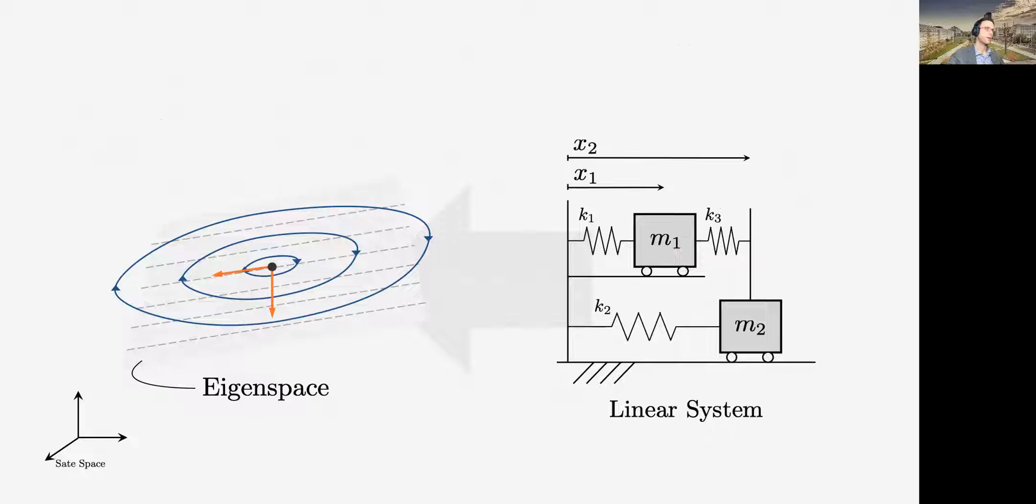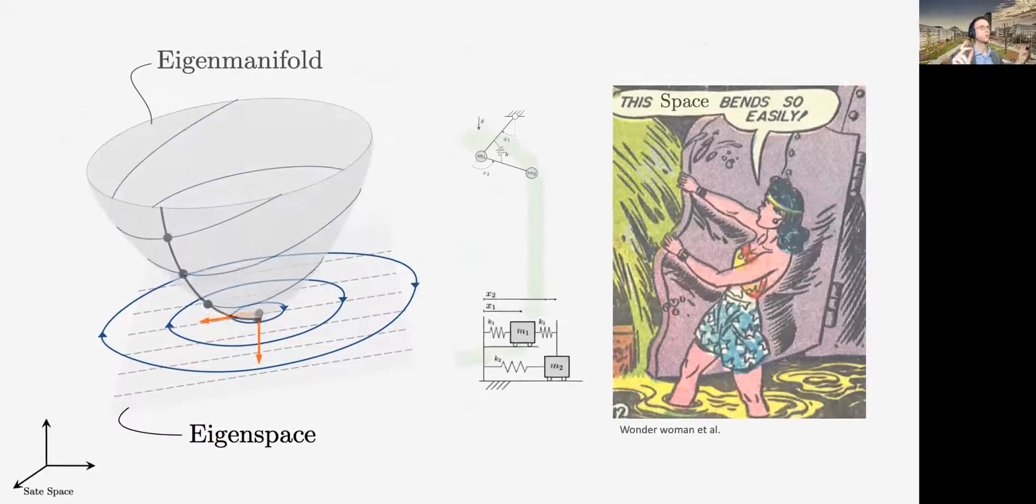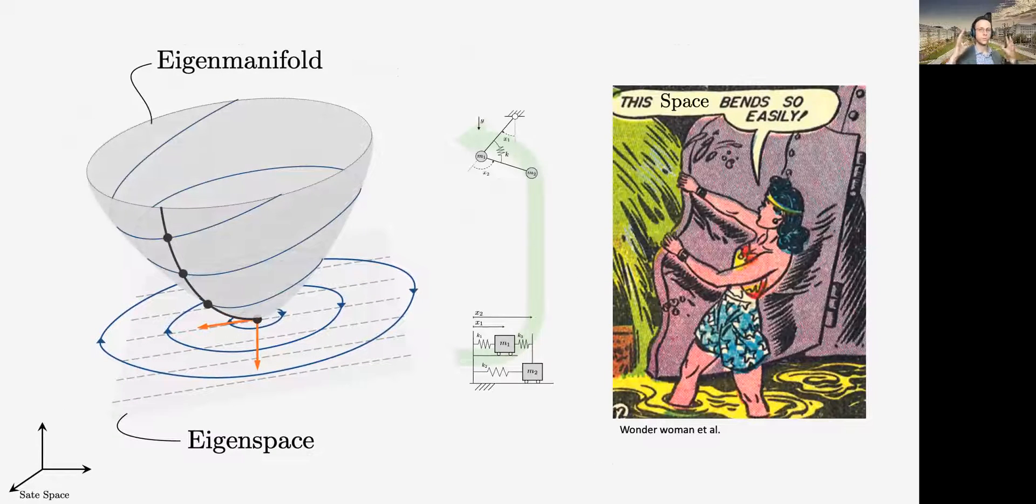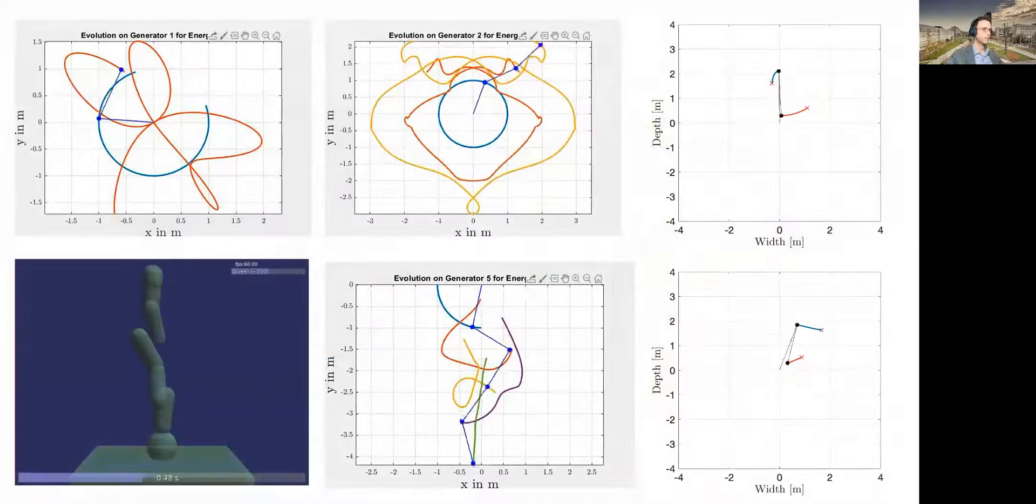If you start with a linear system in an eigenspace, it's a flat collection of infinite orbits, infinite linear oscillations. What you have to do when you move to the non-linear case is, quote-unquote, only curve the space, and this also curves the eigenspace that instead of being flat becomes a surface, therefore a manifold. This is why we define it as an eigenmanifold.